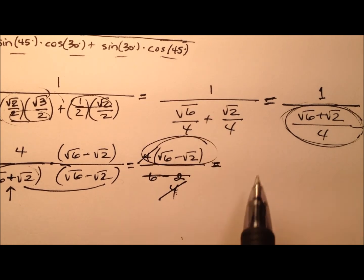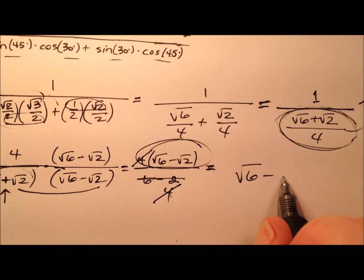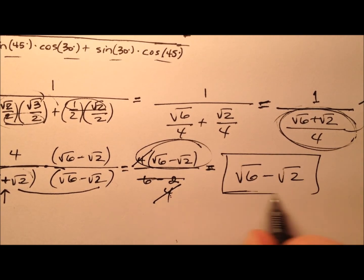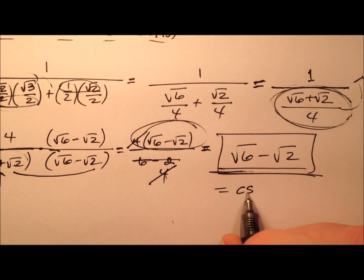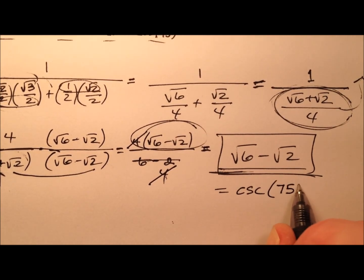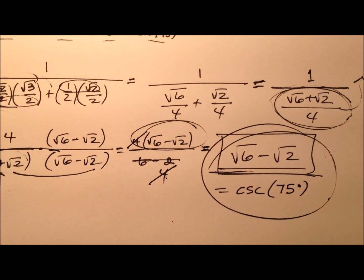So what do we have then? It's the square root of 6 minus the square root of 2, and that's going to equal the cosecant of our 75 degrees.